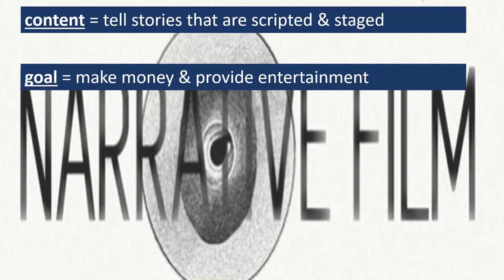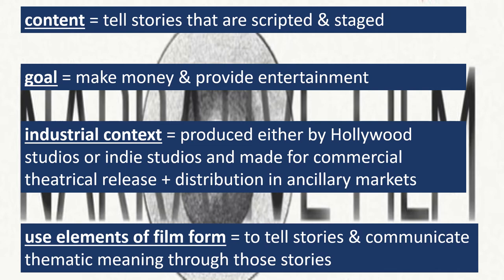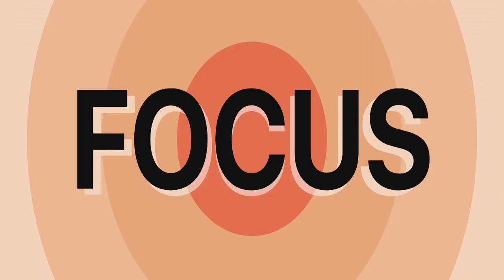Narrative films are produced either by Hollywood movie studios or independent film studios, and they are made for commercial theatrical release, as well as for distribution and exhibition in ancillary markets. Finally, narrative films use elements of film form to tell stories and to communicate thematic meaning through those stories. Because the focus of this course is on narrative cinema, this week we are going to give some limited consideration to the other two types of cinema. This video covers documentary cinema, and the next one covers avant-garde cinema.